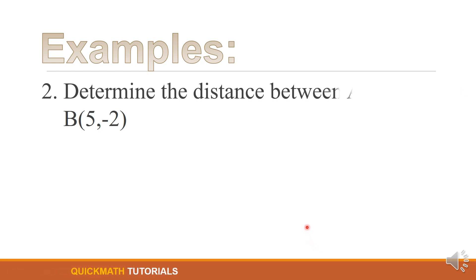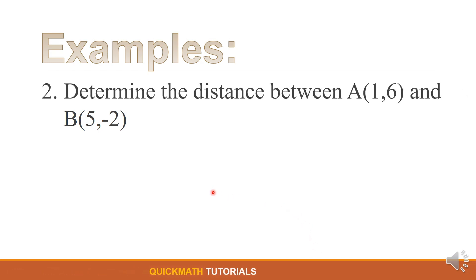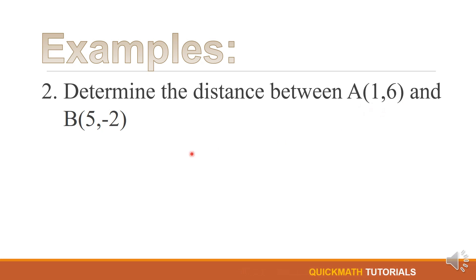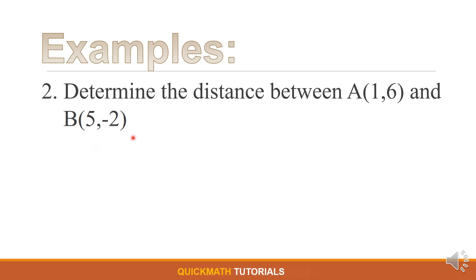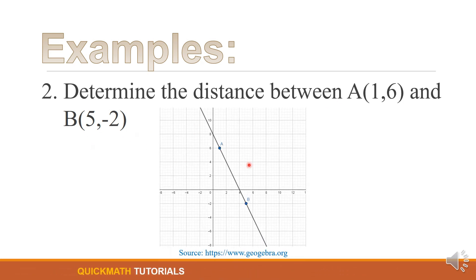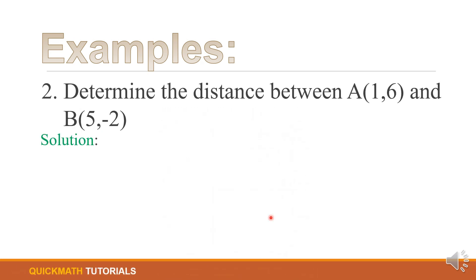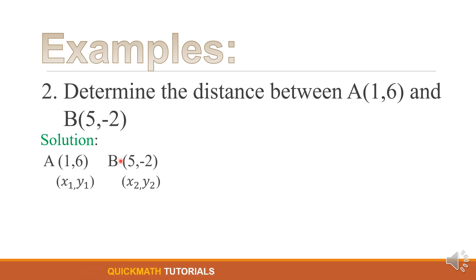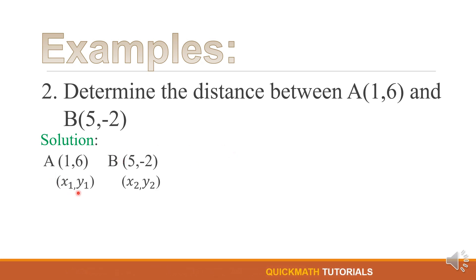For our second example, let's determine the distance between point A, (1, 6), and point B, (5, -2). Again, let's graph these two points, so we have a diagonal line. For this example, let A be our first point and let B be our second point.